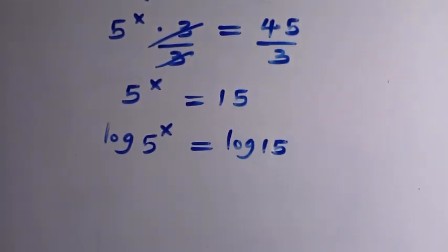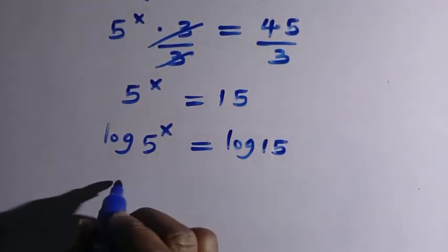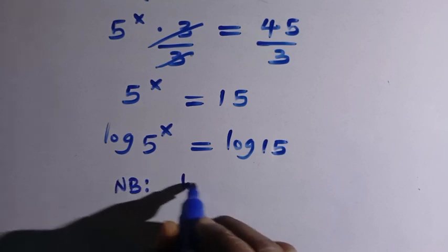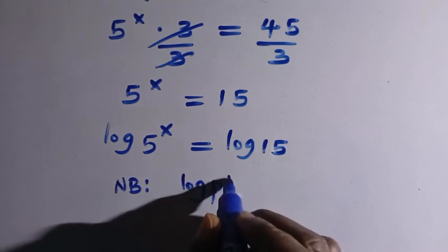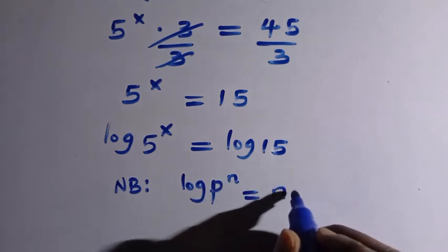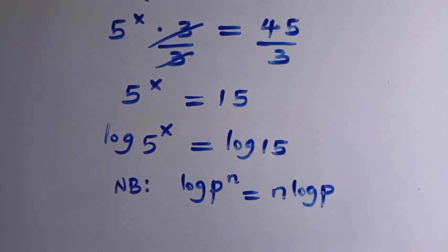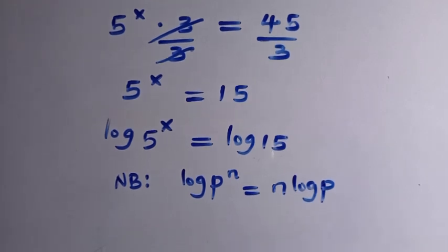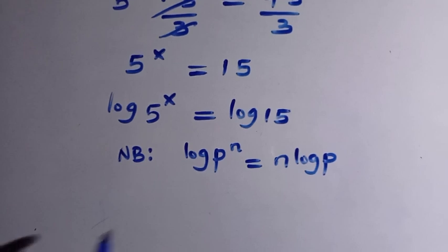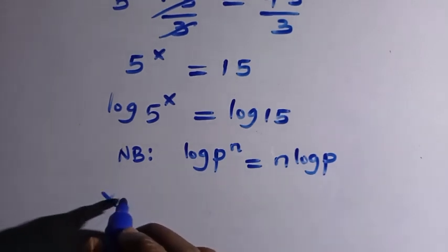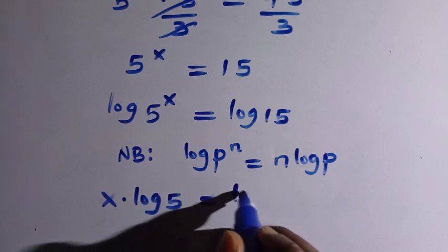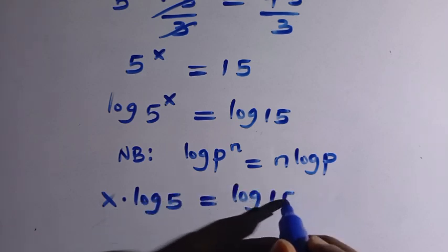So the rule I'm going to apply here is very simple. We note that anytime we have log p raised to the power of n, we consider this as n times log p. So here is the rule, which means we are going to take the power of 5, which is x, down, and we have x multiplied by log 5 equals log 15.